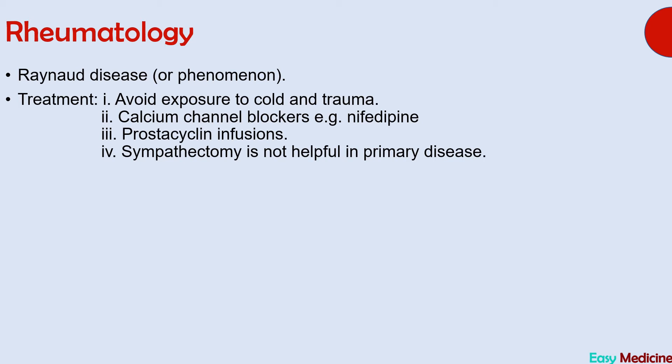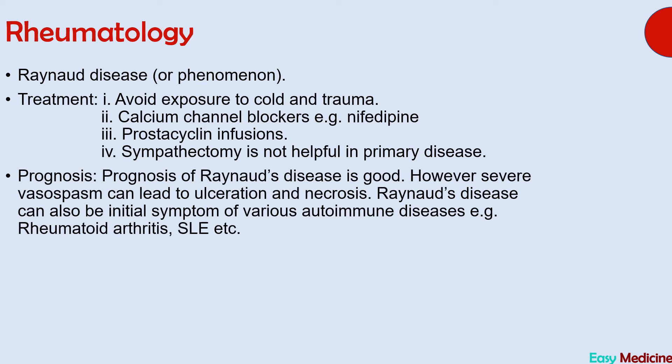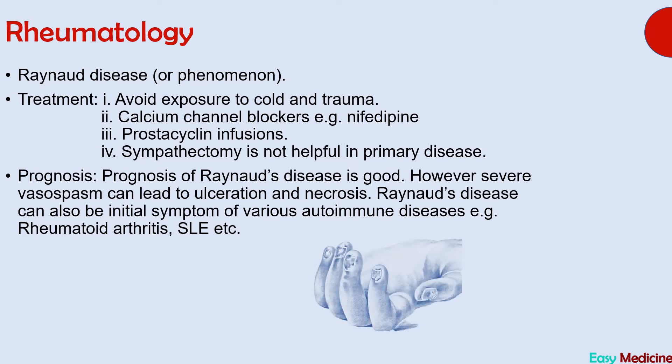The prognosis of Raynaud's disease is generally good; however, severe vasospasm can lead to ulceration and necrosis of fingers. Raynaud's disease can also be an initial symptom of various autoimmune diseases, such as rheumatoid arthritis, SLE, and systemic sclerosis or scleroderma. A picture shows ulceration and necrosis of the tips of the fingers as the eventual result of Raynaud's disease.